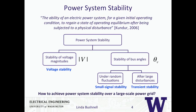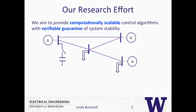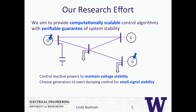Our research effort is focused on coming up with computationally scalable control algorithms, and we want to make sure we have verifiable guarantees for these algorithms. Looking at a power system with generators G and buses with loads — one problem for maintaining voltage stability is switching in a capacitor for a generator to maintain voltage stability. The other one is choosing generators to exert some control to damp the small signal phase instability. And then the third problem is if there's a big disturbance, you want to start shedding loads — which loads do you actually shed? That's the transient instability problem.